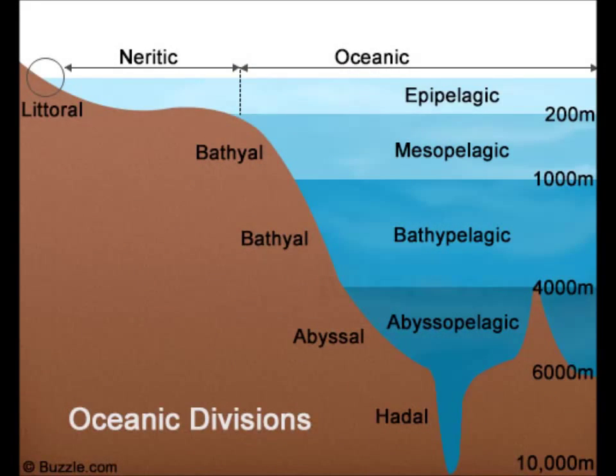The majority of the deep sea floor is found between 4,000 and 6,000 metres, although the deepest part, the Mariana Trench, reaches to 10,000 metres. At these depths, light is non-existent and abiotic factors such as darkness, hydrostatic pressure, and low temperature occur.